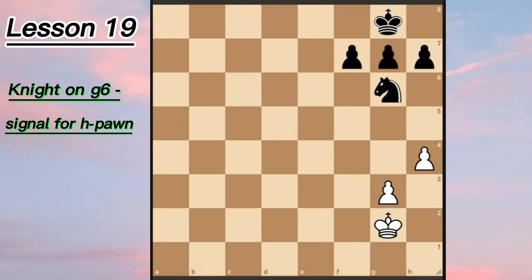So guys, let's repeat: if you see the opponent's knight on g6, it may be a signal to attack — a signal to play h4 and h5 right now, or first play g3 if the pawn is unprotected. Attack the Black king, gain some space advantage, and win the game.